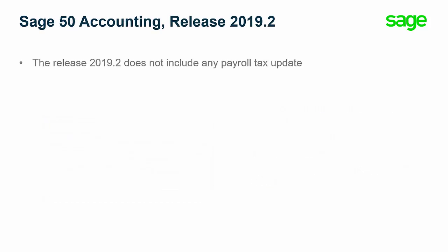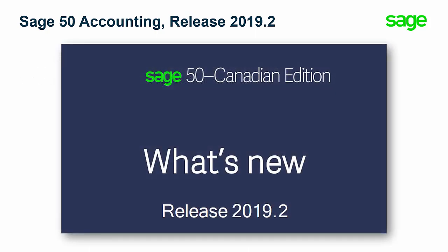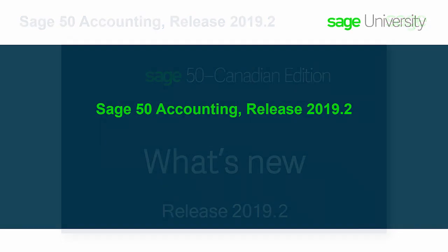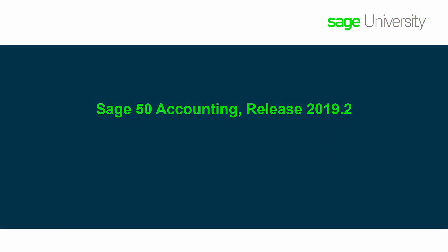Please note that release 2019.2 does not include any payroll tax update. Be on the lookout for a tax update in June 2019. For more details about the 2019.2 release, you can review the What's New PDF document included with your upgrade, as it includes some other resolved issues. You now know what's new in Sage 50 Accounting release 2019.2. Stay tuned for our next release.